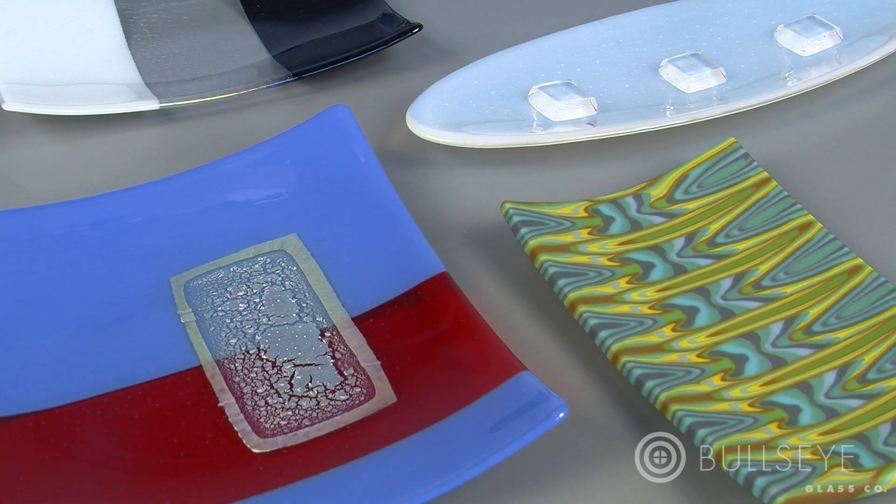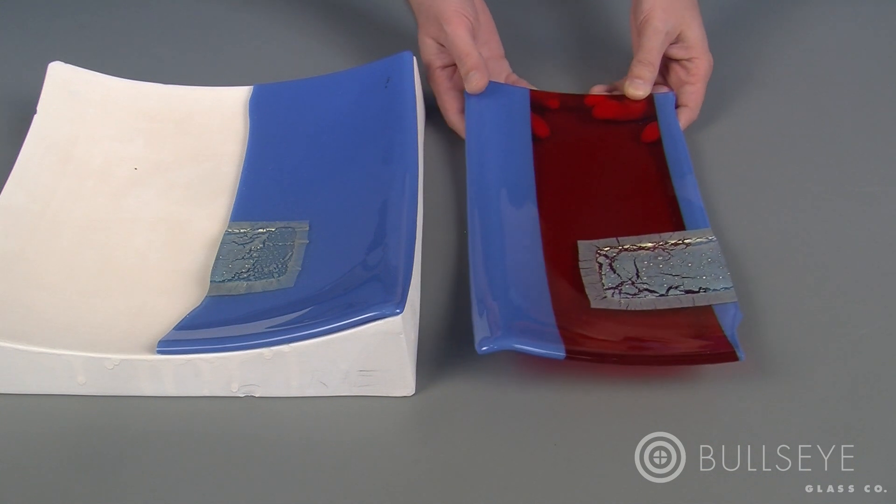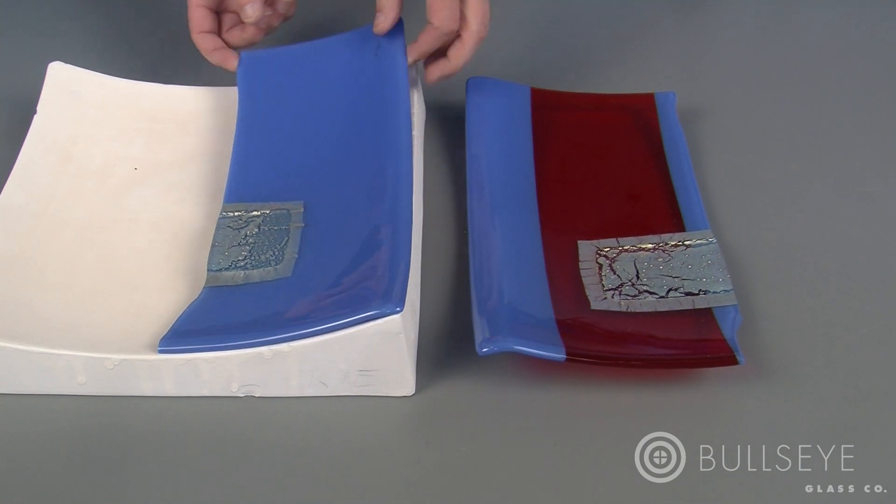Kiln forming glass can yield results that range from elegantly simple to intriguingly complex. But when a piece emerges from the kiln cracked or broken, the results are just disappointing.